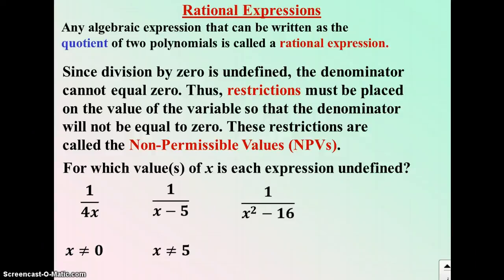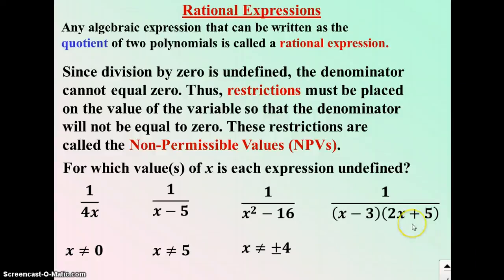For 1 over x squared minus 16: if you factor that denominator as a difference of squares, you get (x plus 4)(x minus 4). Therefore, the non-permissible values are x cannot equal plus or minus 4. And 1 over (x minus 3)(2x plus 5) has non-permissible values of 3 and negative 5 halves, so x cannot equal 3 or negative 5 halves.